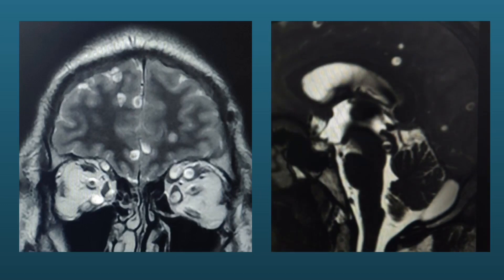In these images we can see that cysticercosis lesions are seen in the ocular muscles also. The most crucial finding is that we can see hydrocephalus in the sagittal T2 weighted image.